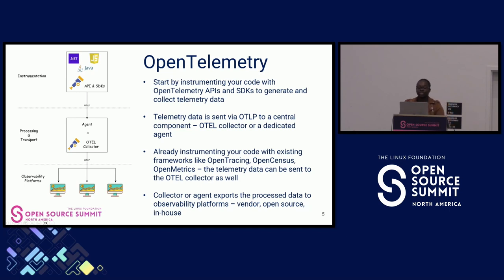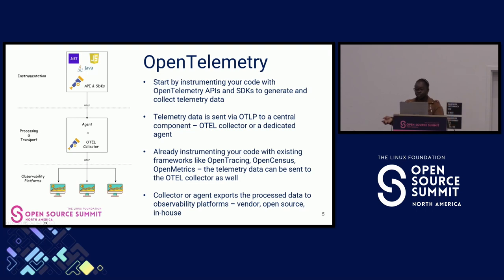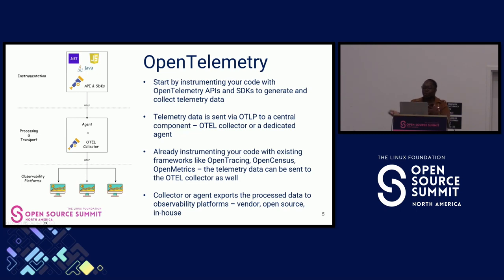OpenTelemetry is also designed to be easy to integrate with existing telemetry frameworks. If you already had an application using OpenTracing, OpenCensus, or OpenMetrics, you can still forward those metrics to the OpenTelemetry Collector without re-instrumenting everything. With the collector, you can process, transform, filter, or do whatever you want with the telemetry data before forwarding it to as many observability platforms as you want — mix and match, switch between platforms, or use open source or in-house solutions.